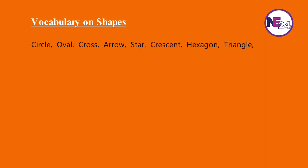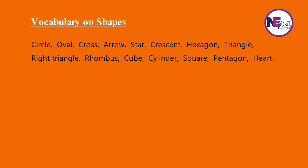English vocabulary on shapes. Circle, oval, cross, arrow, star, crescent, hexagon, triangle, right triangle, rhombus, cube, cylinder, square, pentagon, heart.